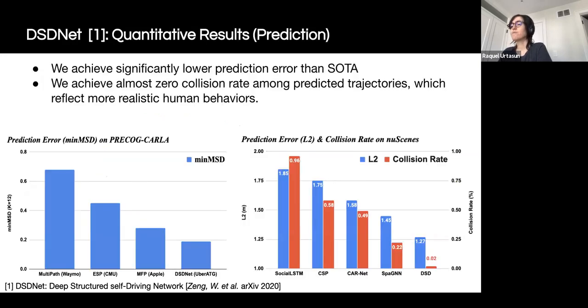Here, we first report our prediction performance. We compare our multimodal socially consistent prediction method against several state-of-the-art methods on a number of datasets. Here, we show results on two publicly available datasets, nuScenes and PreCo CARLA. We achieve significantly better prediction error. Our method also achieves a near zero collision rate among predicted trajectories, which corresponds to more realistic human behaviors.